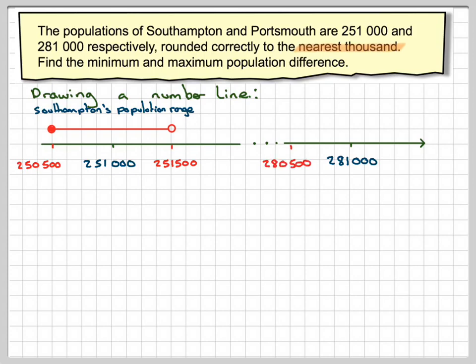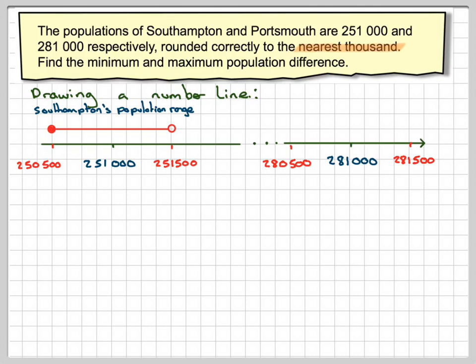Similarly for Portsmouth, this would be 280,500, and this will be 281,500. This is the population range for Portsmouth.